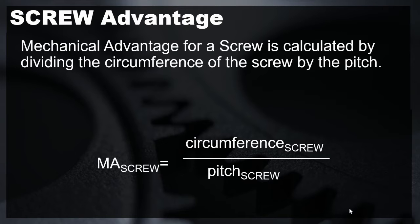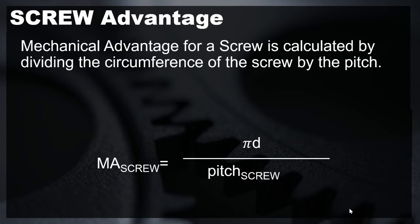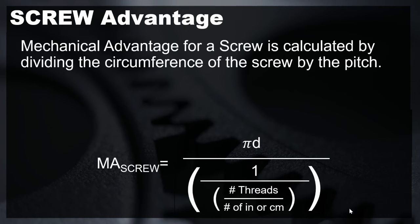The circumference of the screw can be expressed as the diameter of the screw times pi. The pitch of the screw can be expressed as the inverse of the number of threads divided by the length of the screw.